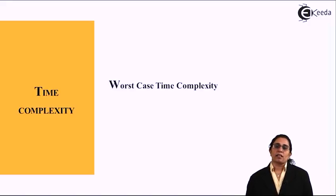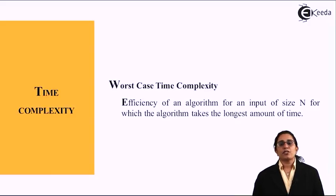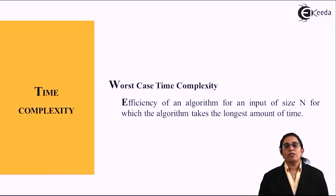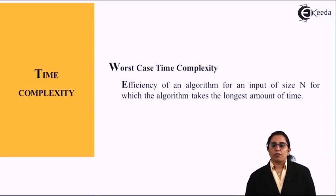The third one is the worst case time complexity. What do you mean by worst case time complexity? It is the efficiency of the algorithm for an input of size n for which the algorithm takes the longest amount of time.